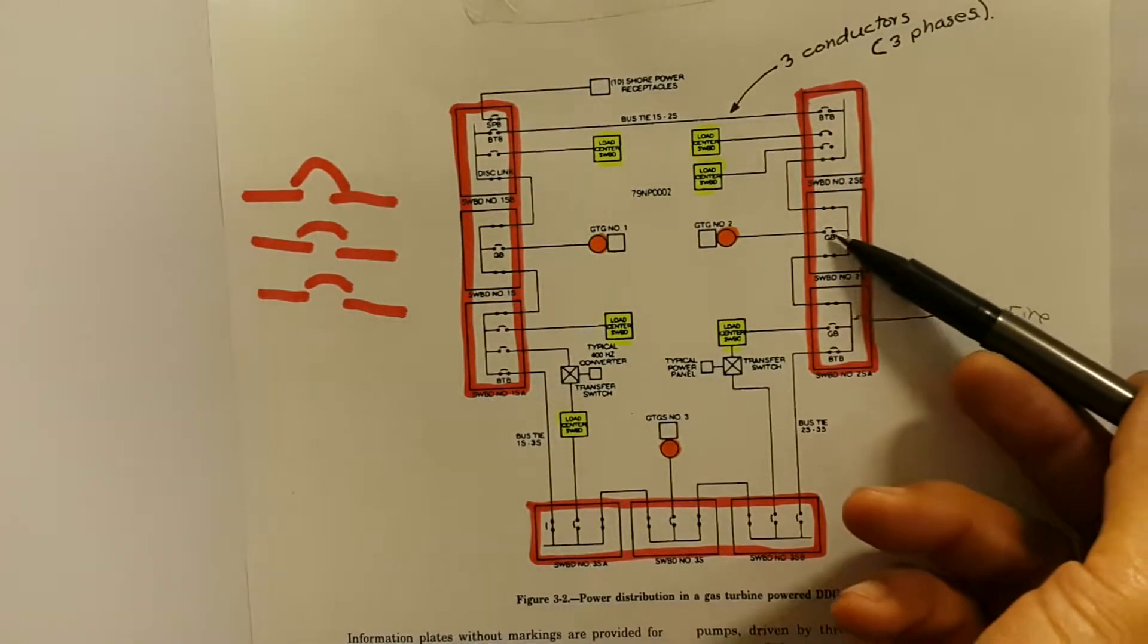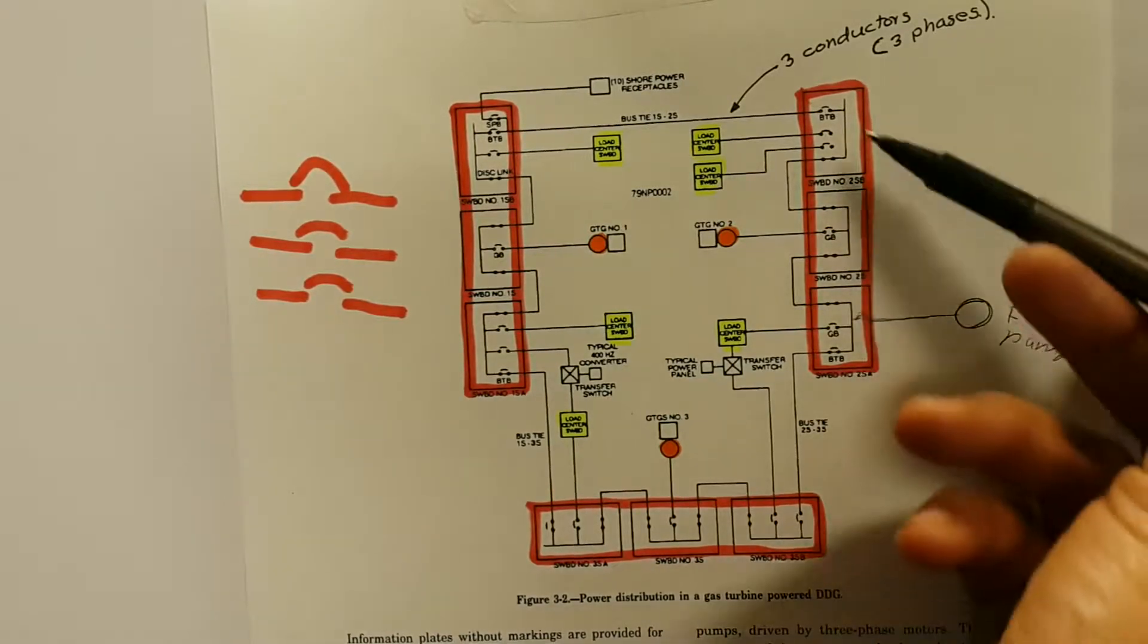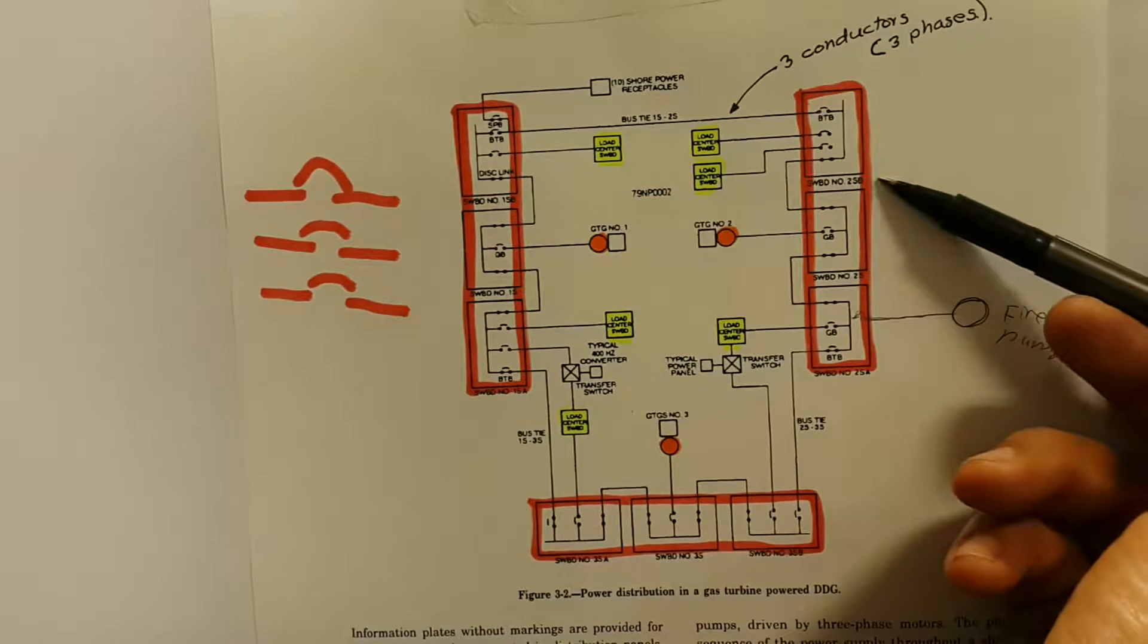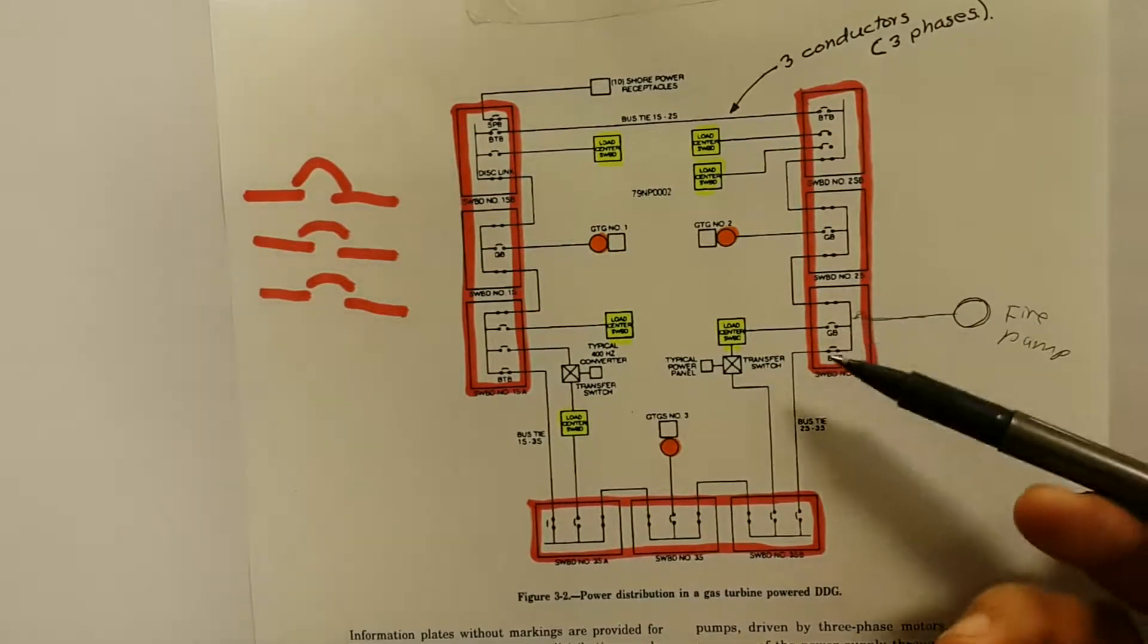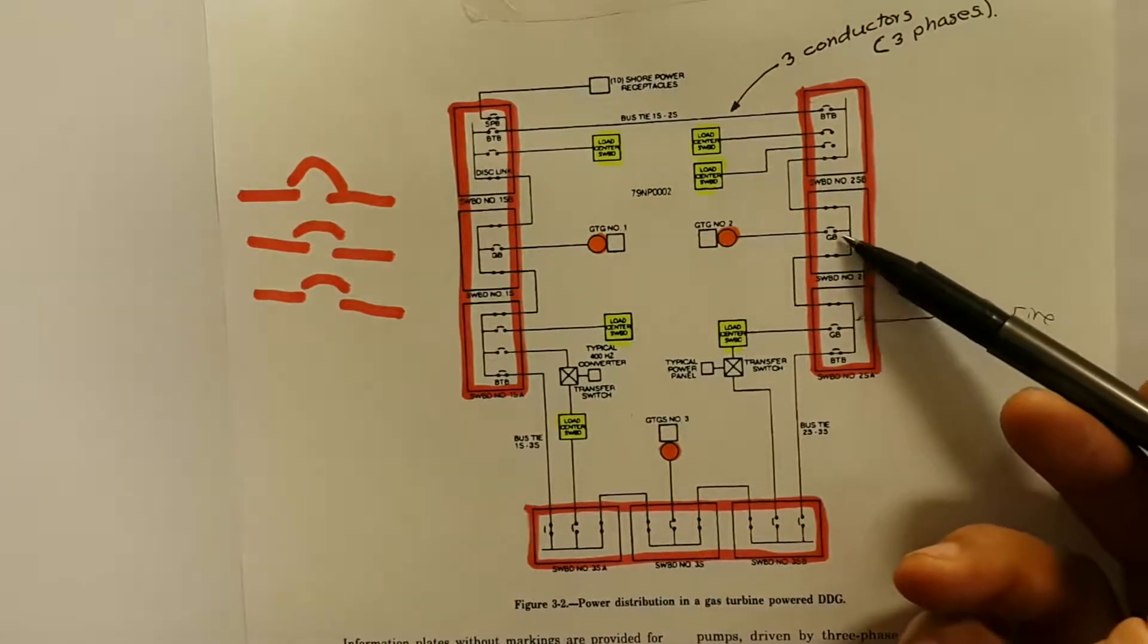Power gets distributed from that center section of the switchboard to the other two sections. In this one, we got 2SB, 2SA, and 2S, which is where power comes from the generator.